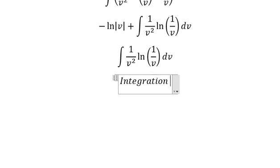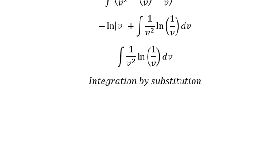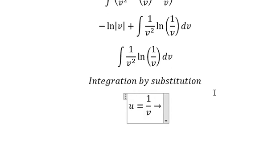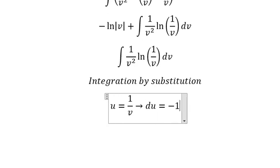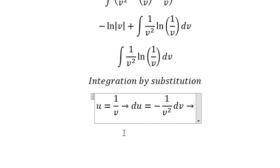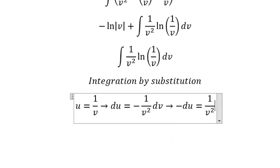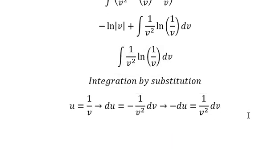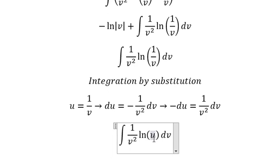Now we need to focus on this one. We can use integration by substitution, so I will put u equals to 1 over v. Later we need to do the first derivative for both sides and we have like this. Because we don't have the negative side in here, I will put this one to the left. This one is about u, and this one with dv is about negative du.